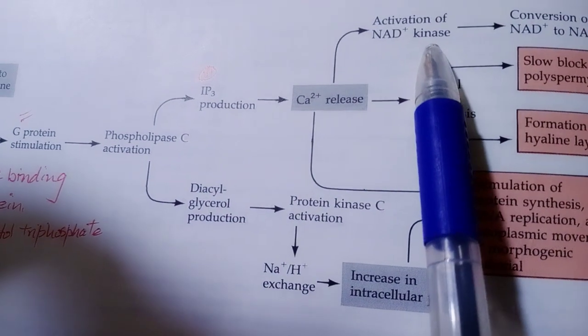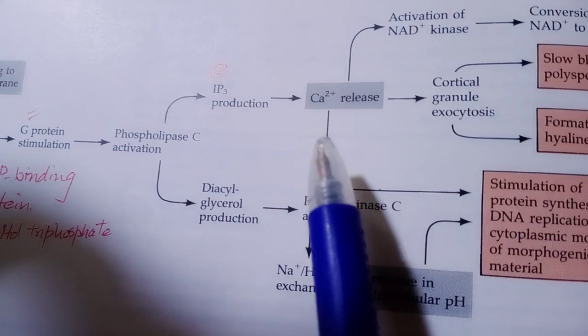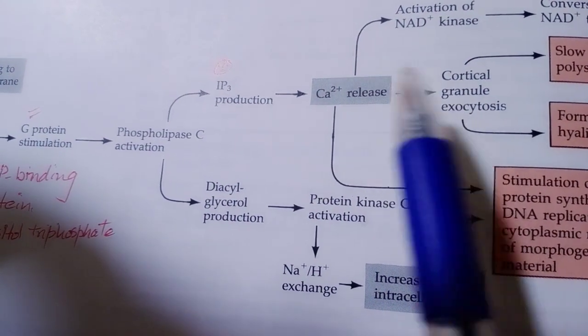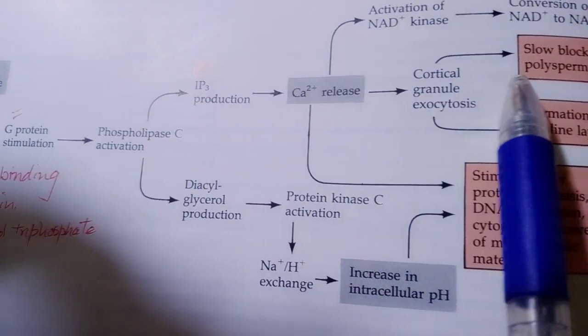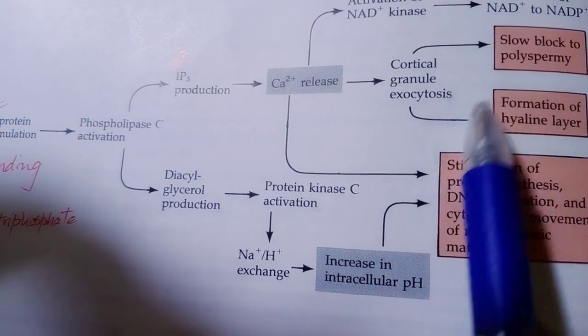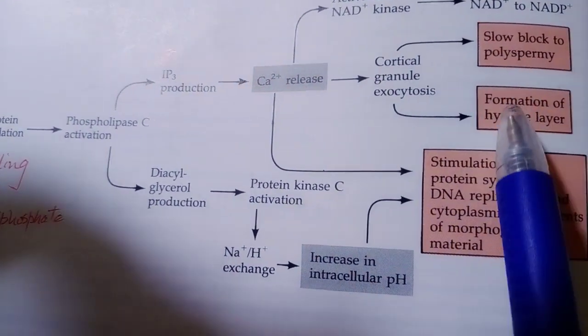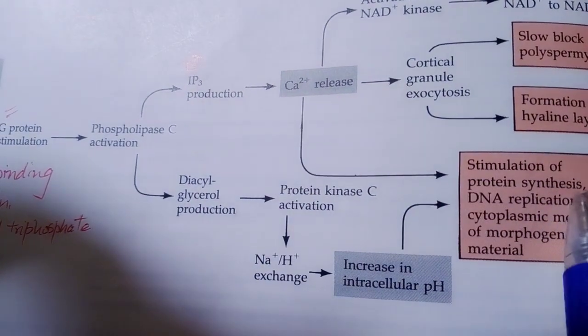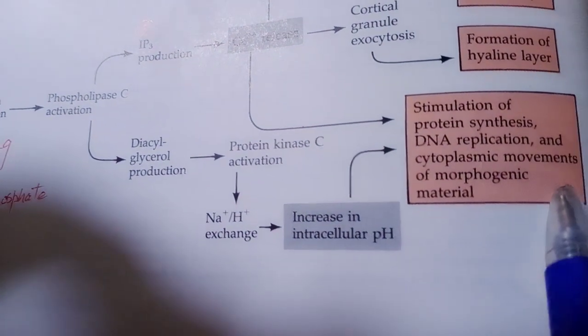NAD kinase is stimulated by calcium ion release. Calcium ion release also causes the exocytosis of cortical granules. These cortical granules form the hyaline layer, which causes the slow block to polyspermy. Calcium ions also stimulate protein synthesis, DNA replication, and cytoplasmic movements of morphogenic materials.